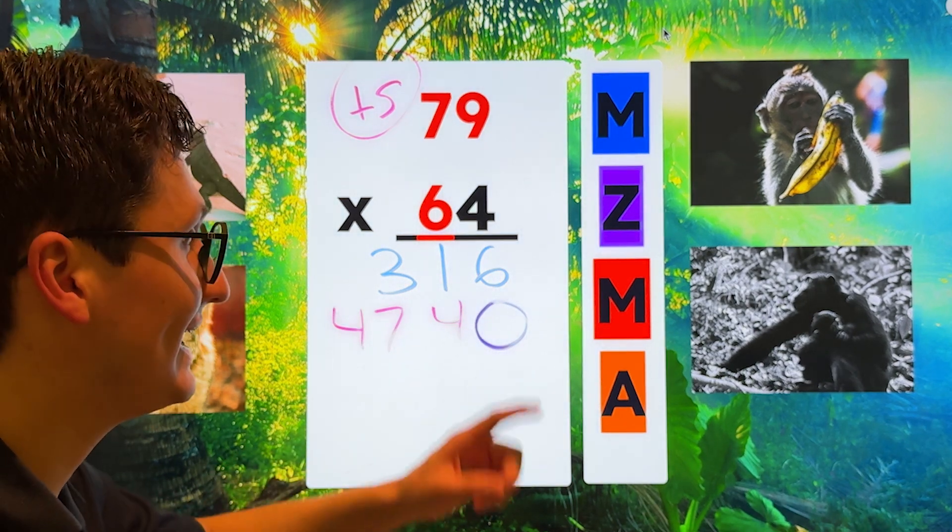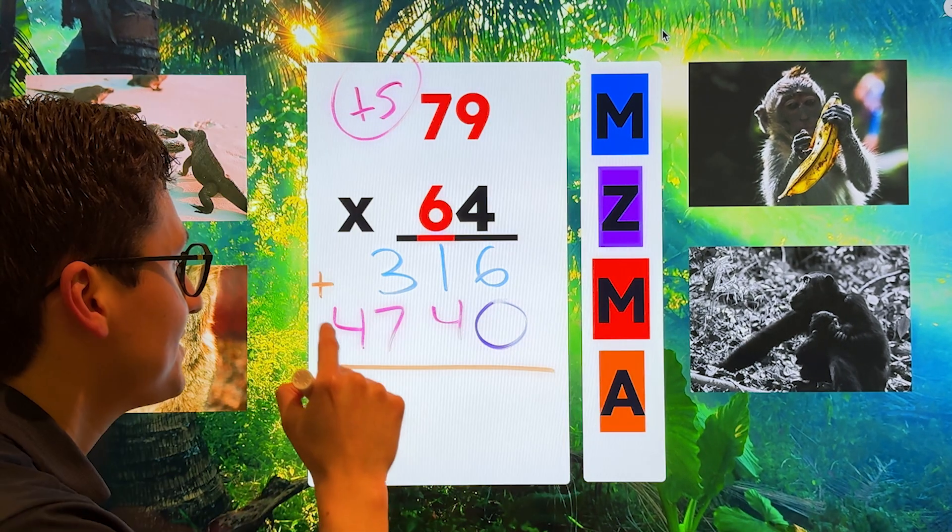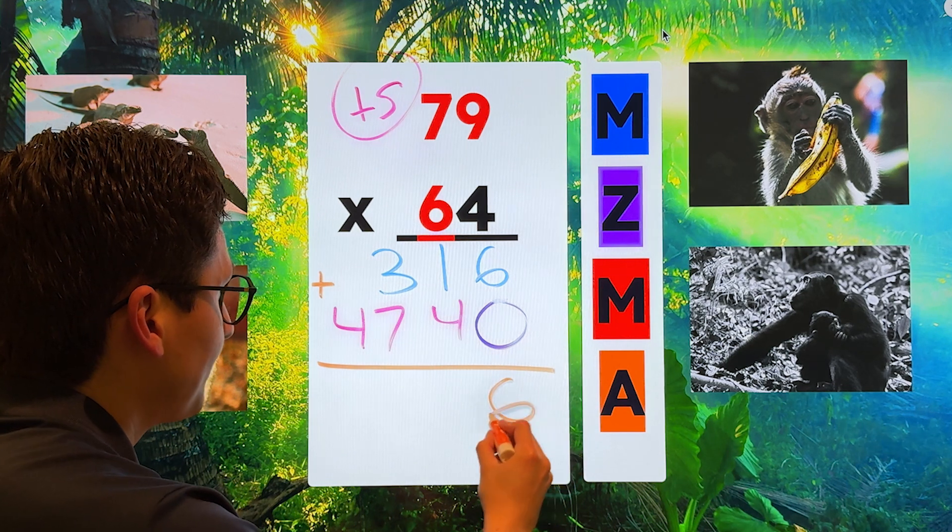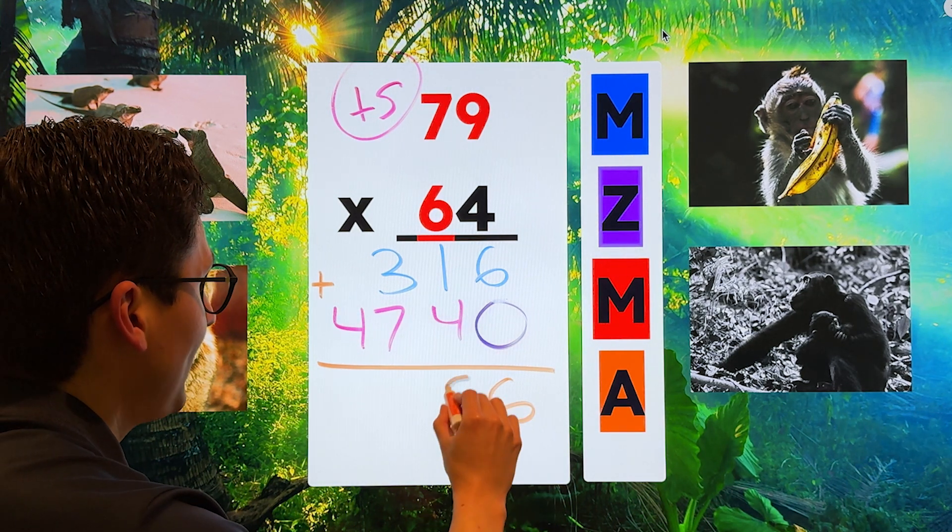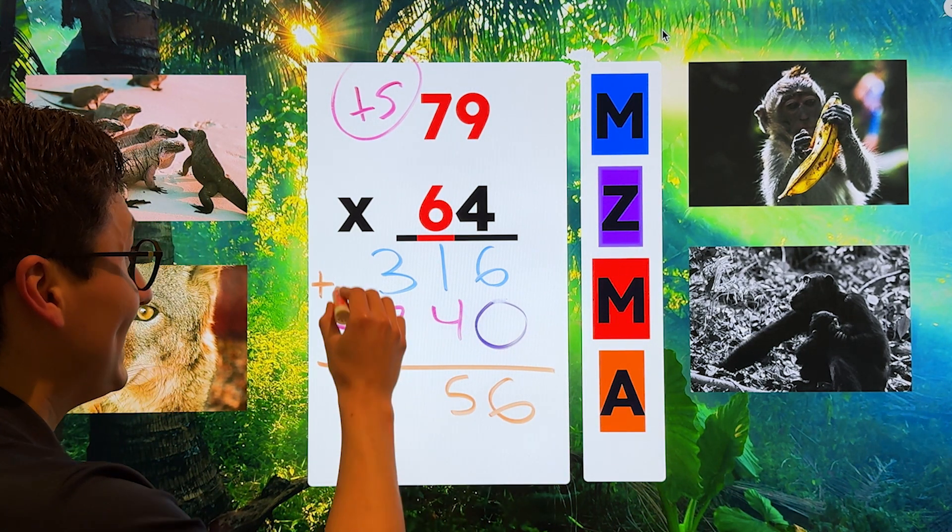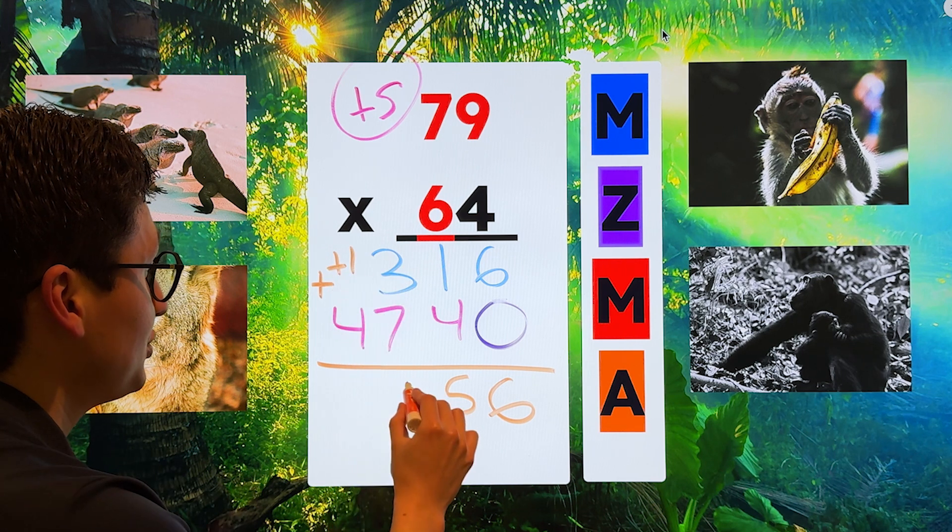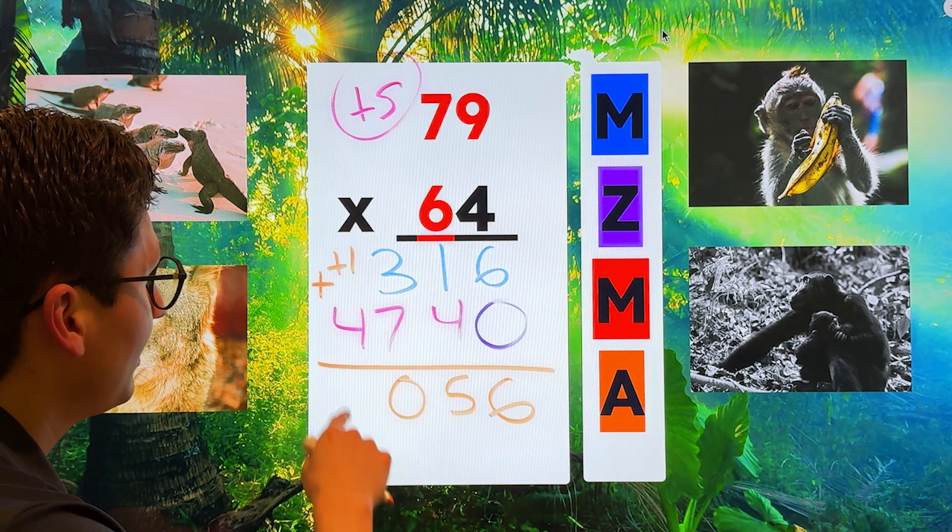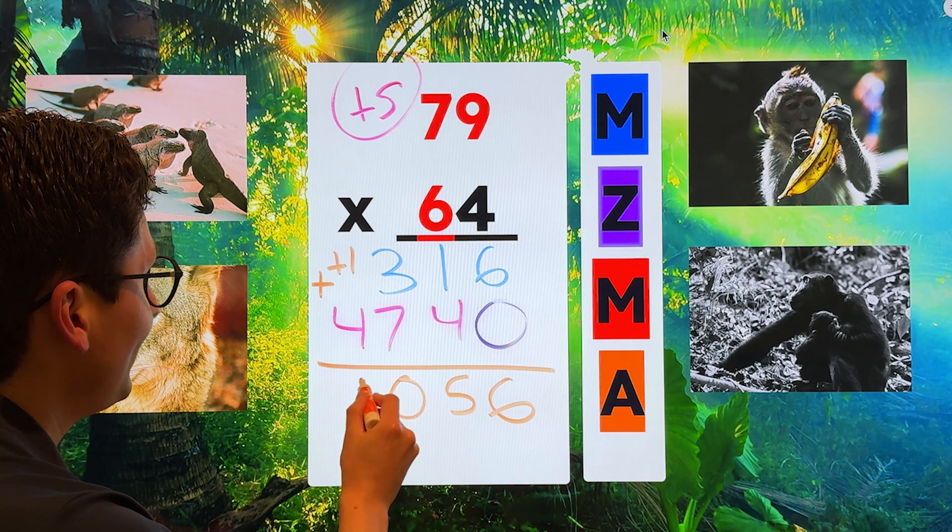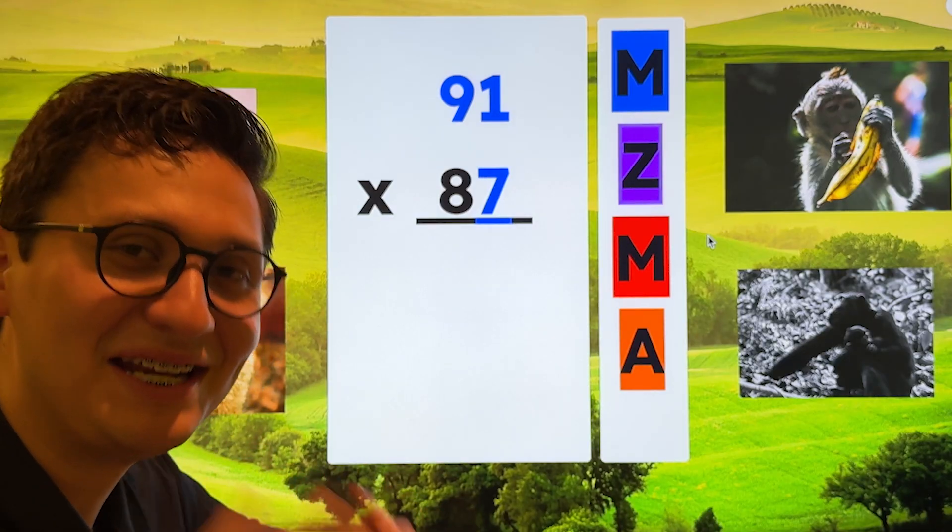We're done with step three. All we have left to do is to add. Six plus zero is six. Four plus one is five. Seven plus three is 10. We make sure to regroup. So seven plus three is 10. Four plus one is five.